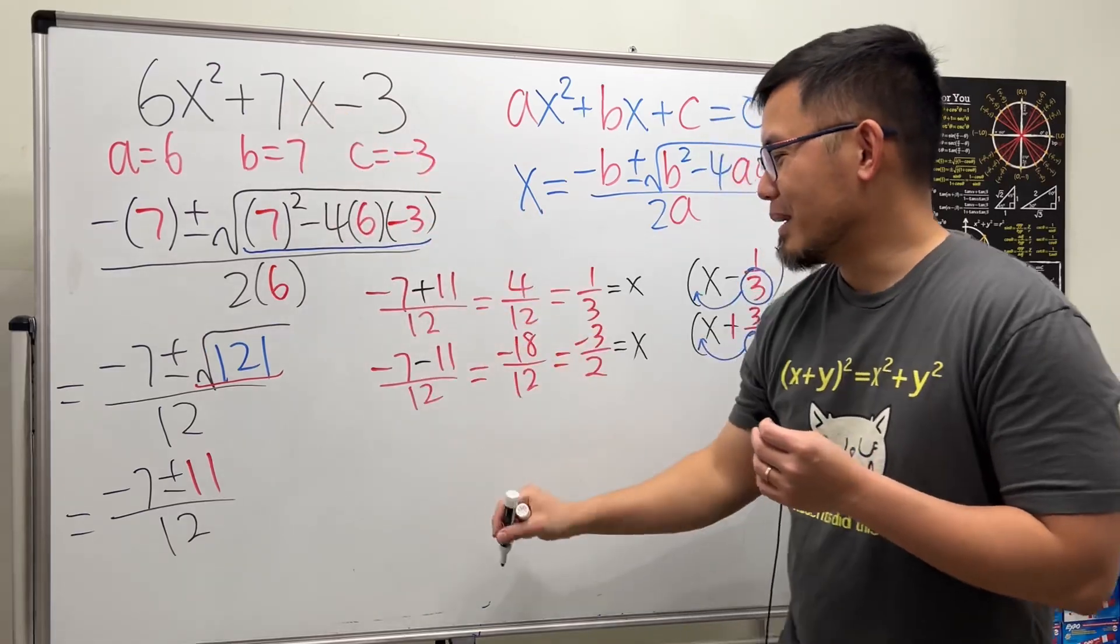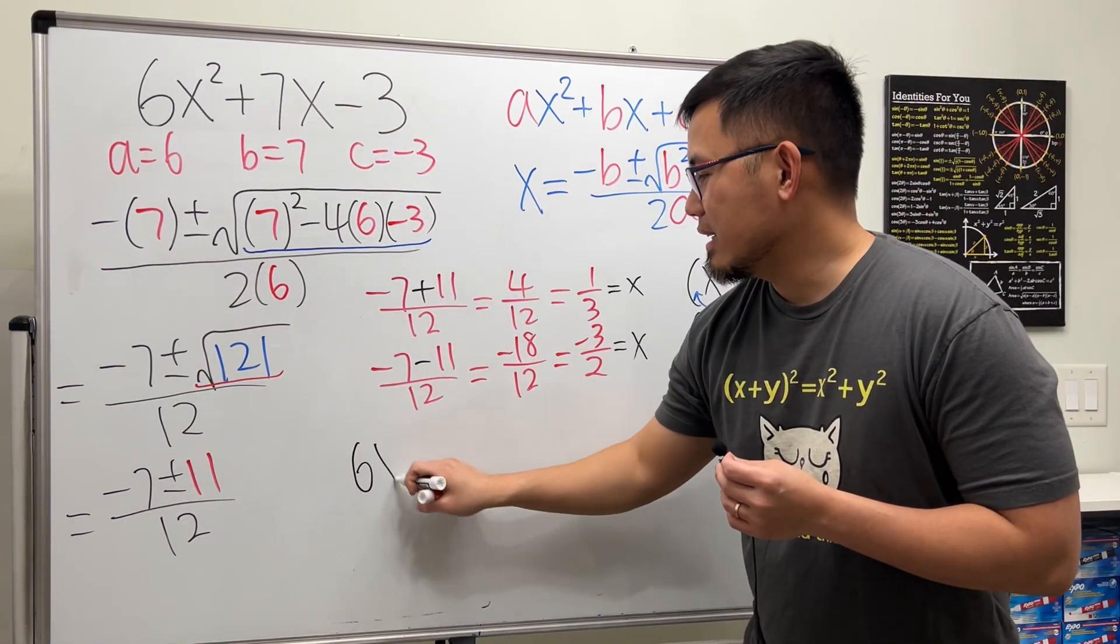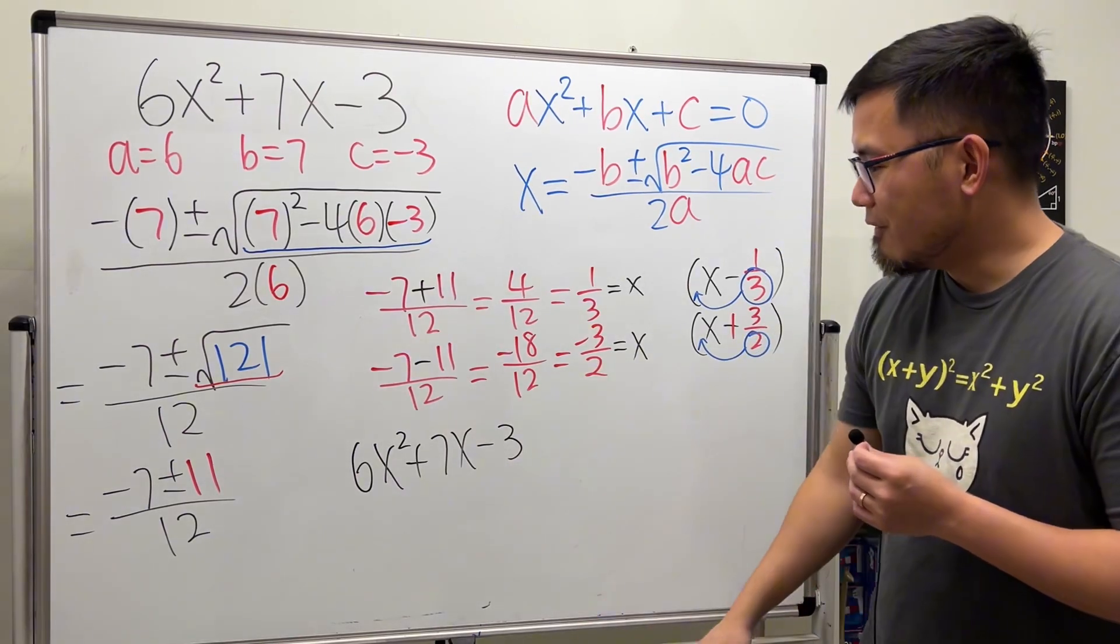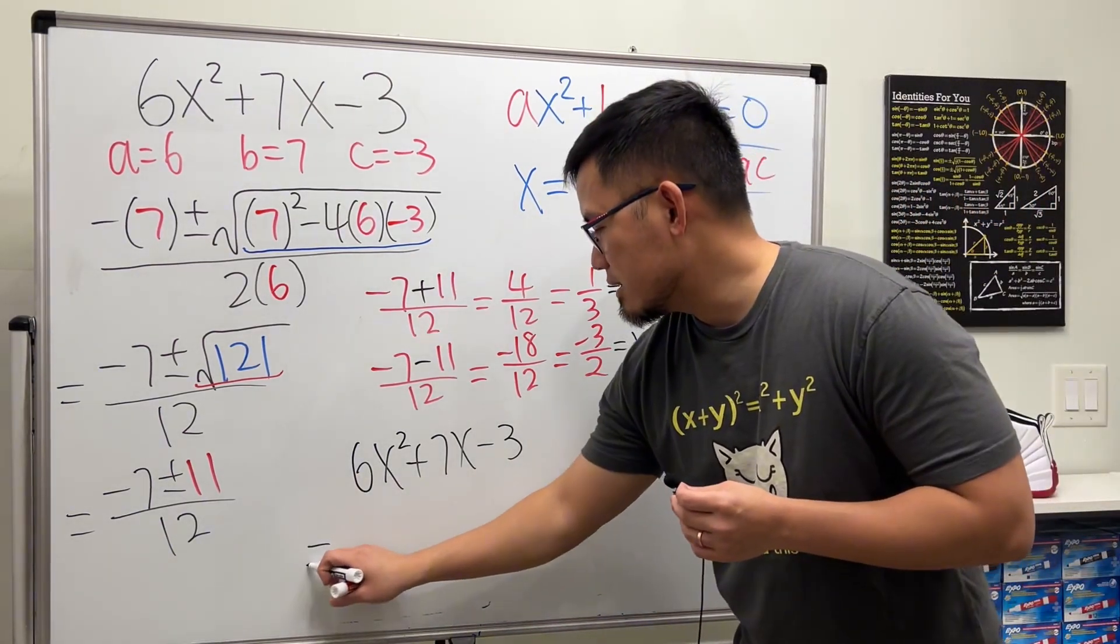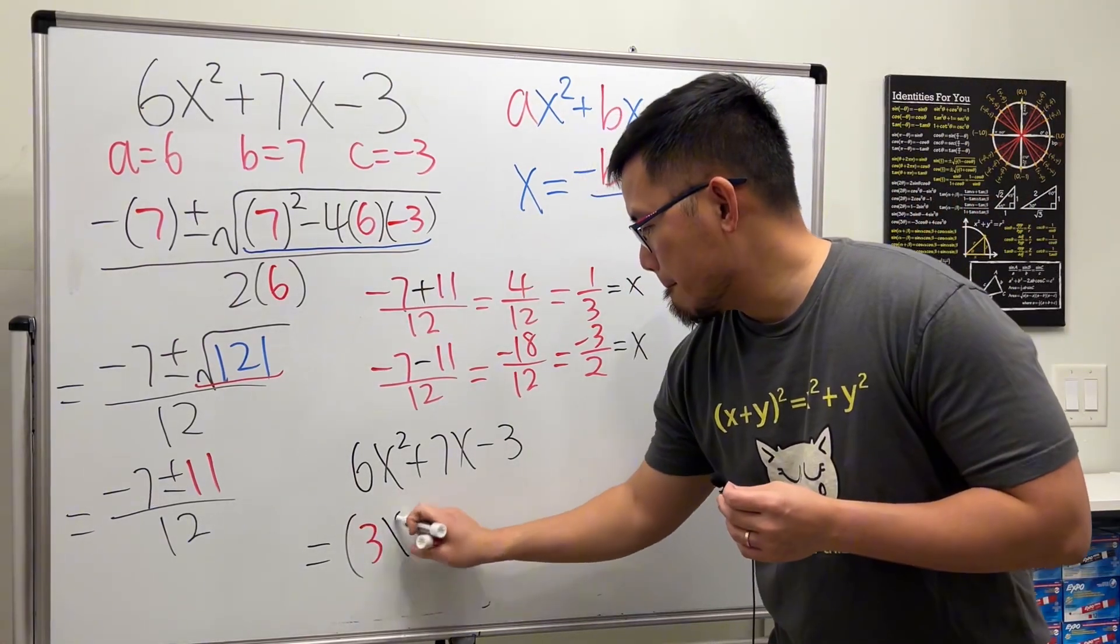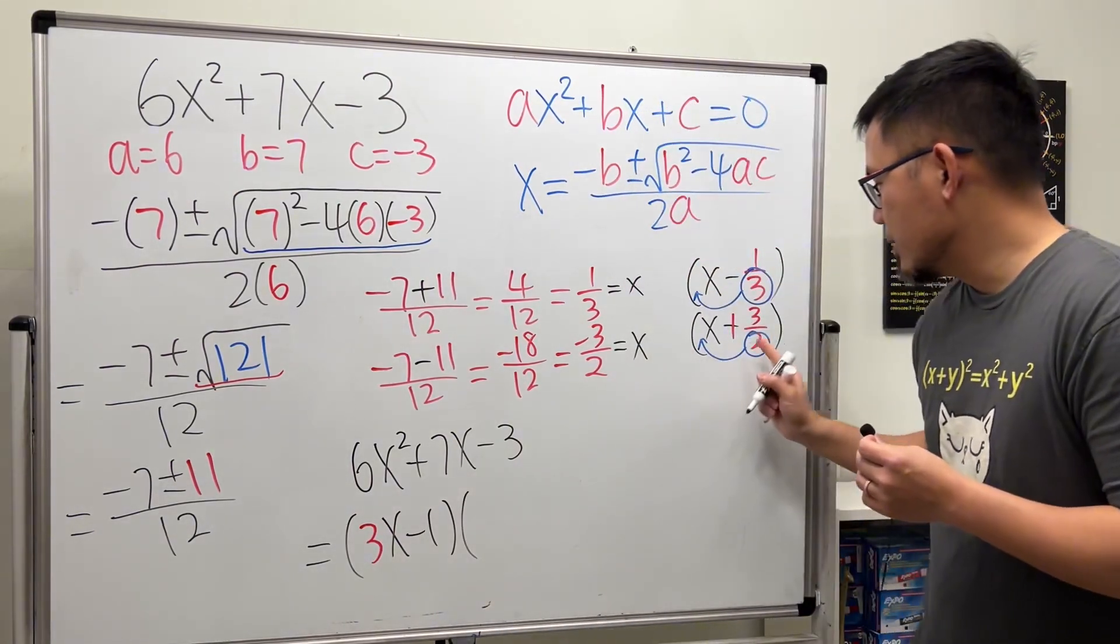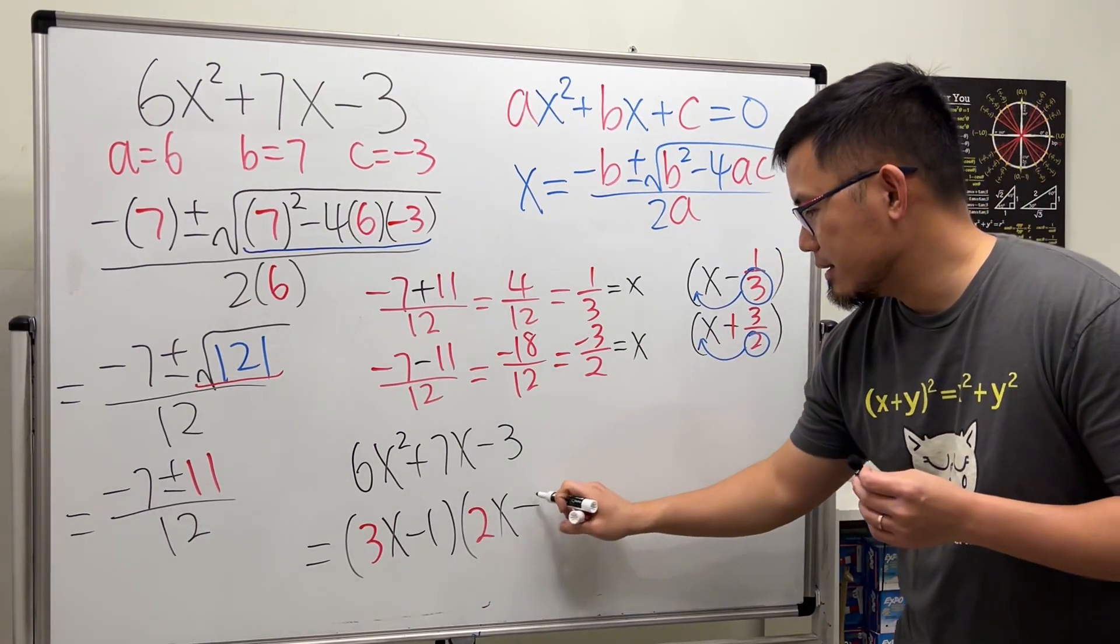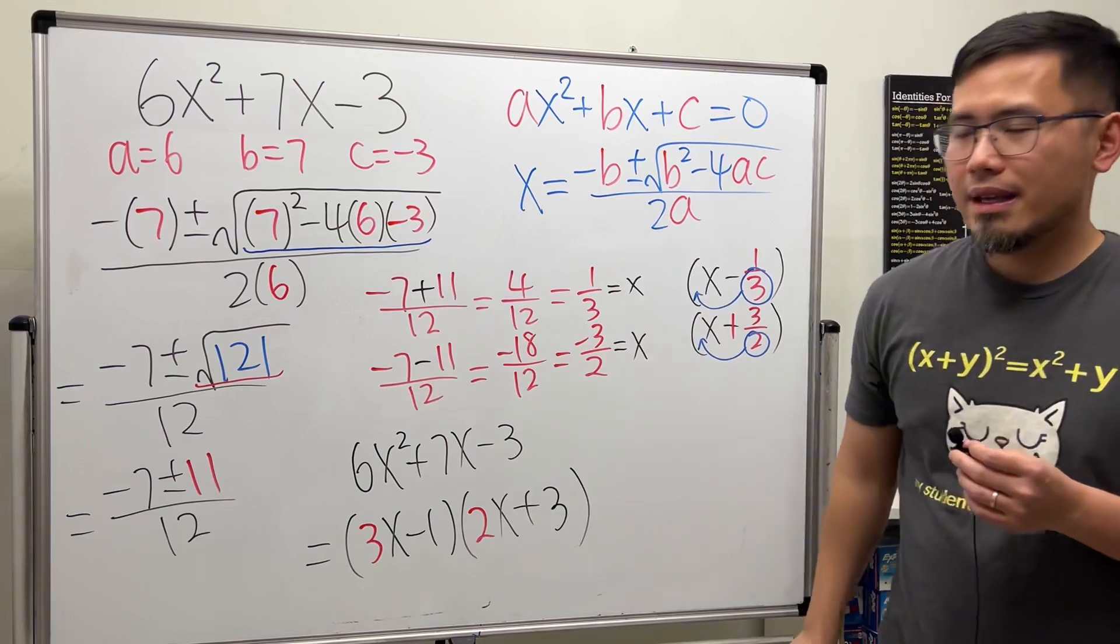I can go back to the original and say 6x squared plus 7x minus 3. We can factor that and we can get this as 3x minus 1 times 2x plus 3. That's it.